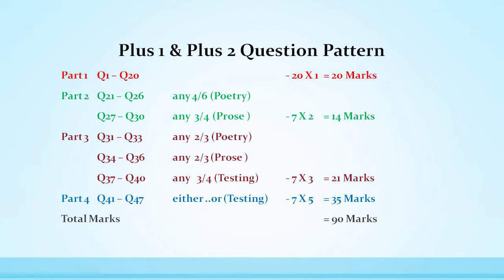Part 4, question 41 to 47. Here you are given either or type question. You will be given 7 questions either or and you have to choose 1. Each one carrying 5 marks, therefore totally 35 marks and hence the total marks are 90 marks.